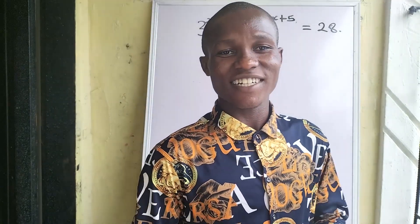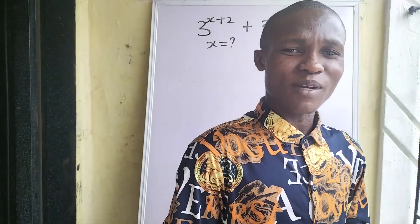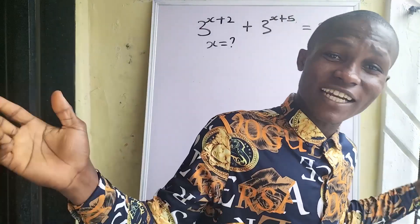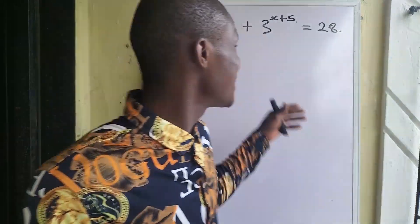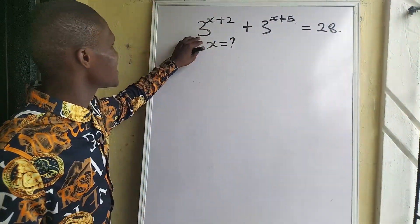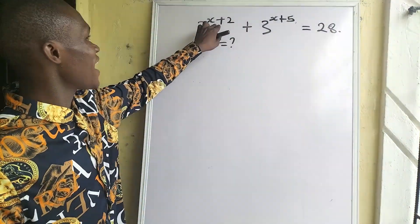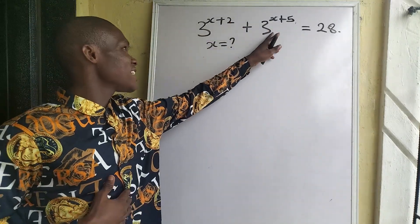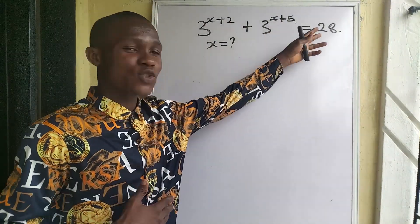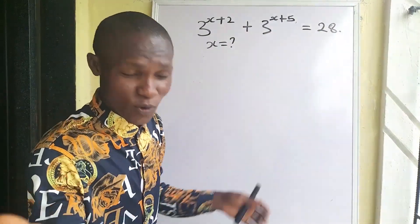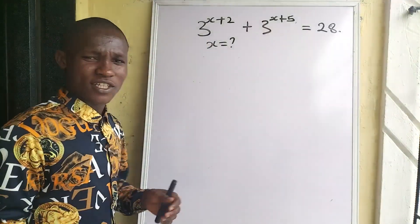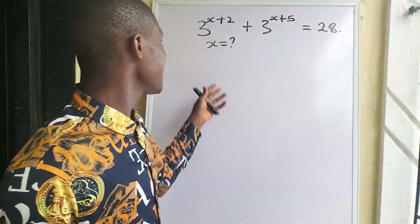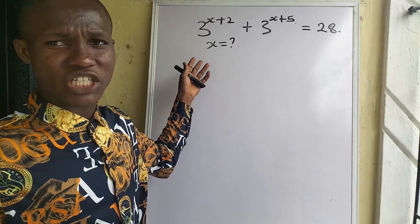Welcome again guys to BrightBrainCityGrass, where problems of mathematics are resolved. Today we are looking at a wonderful challenge which is 3 to the power of x plus 2 plus 3 to the power of x plus 5 equals 28, and the question says x is equal to what? So we are looking for the value of x in this nice exponential challenge.